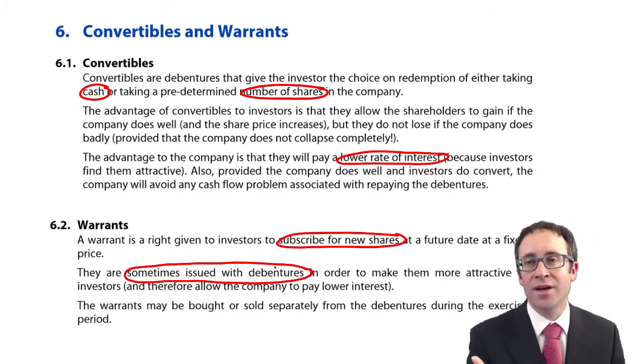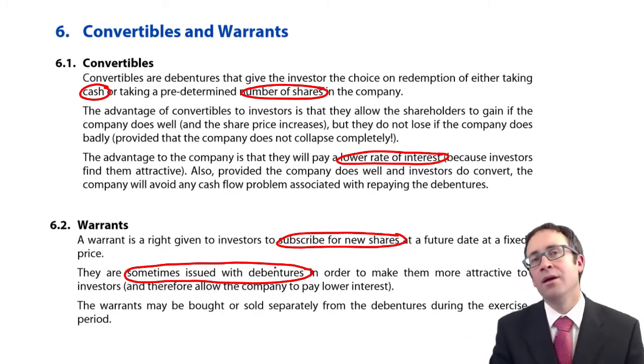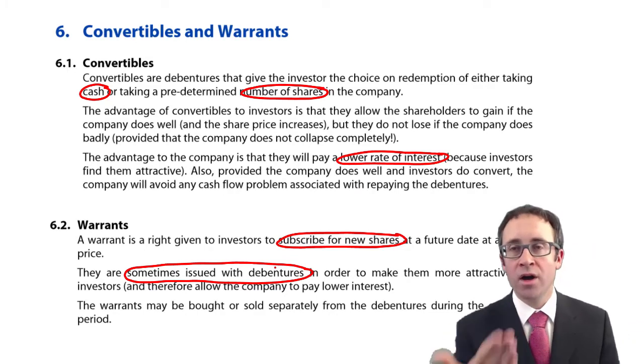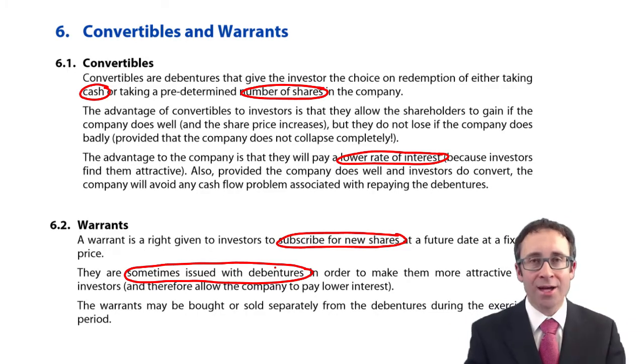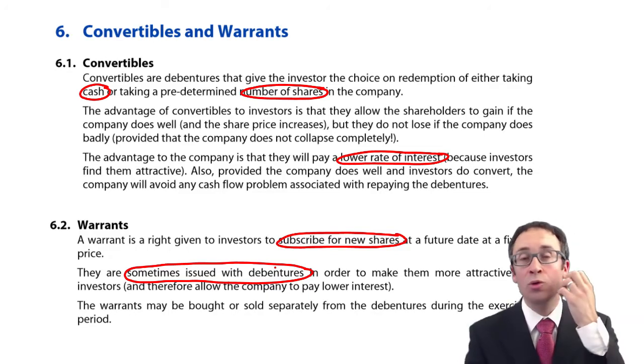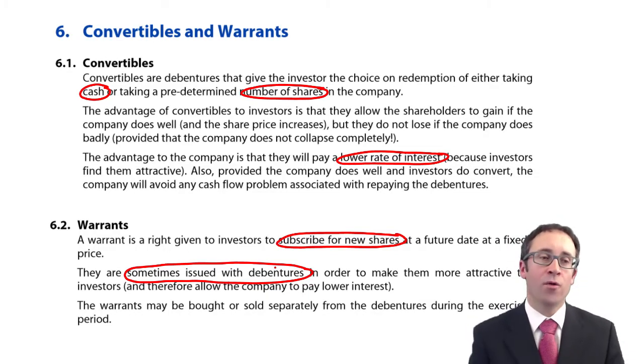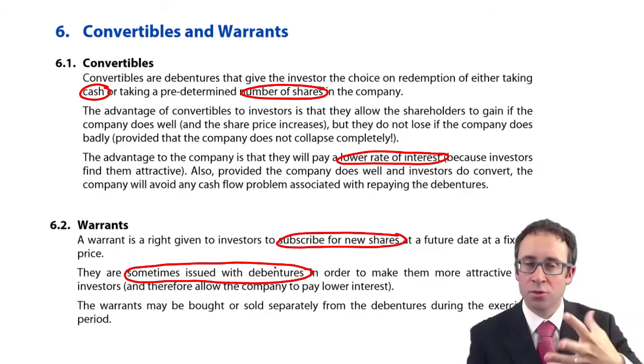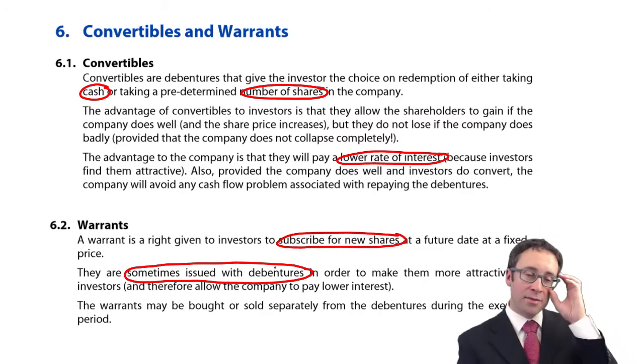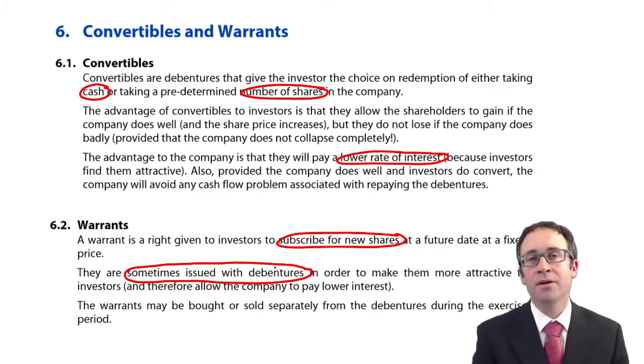And it's because you have a debenture and you have the issue of shares, people get confused. Warrants, the investor has to pay to get some additional shares and will get the cash back anyway. But your convertibles, you either will get cash or you receive shares. You do not have to pay for those shares. So it's really important that you understand the difference between them. The focus most of the time is going to be on convertibles because that is where you can bring in the numbers as well.